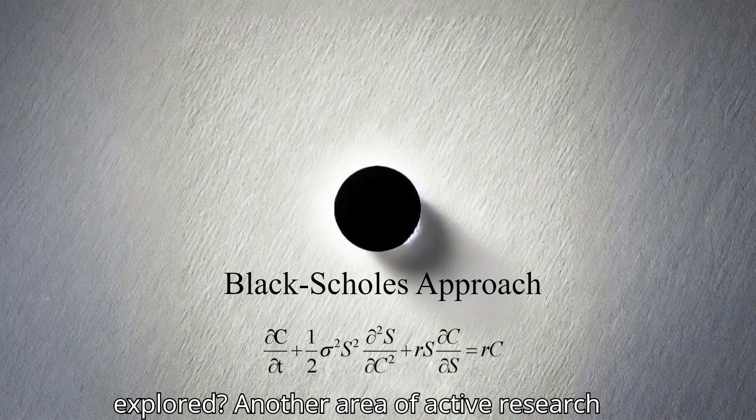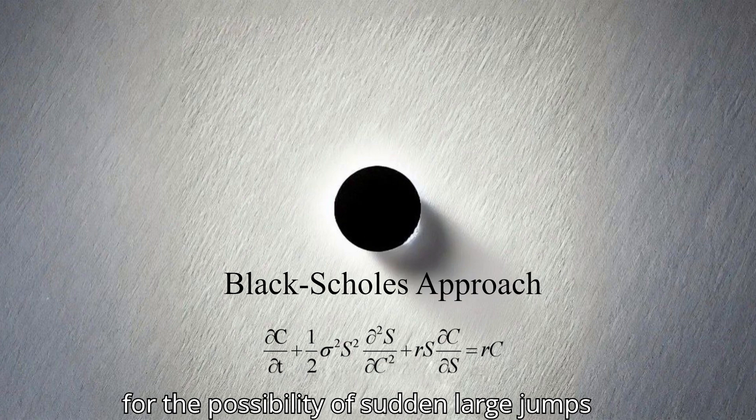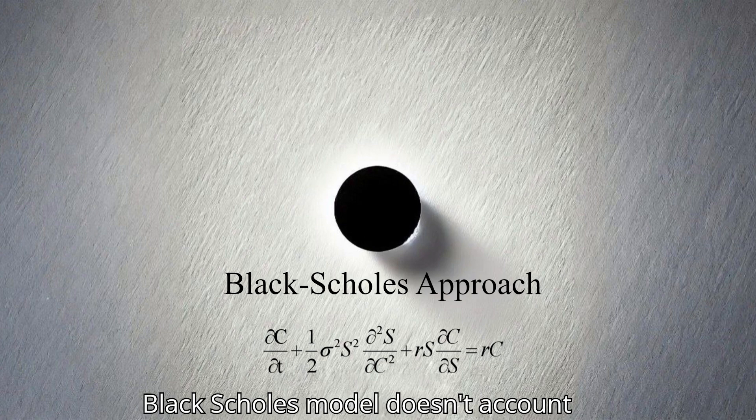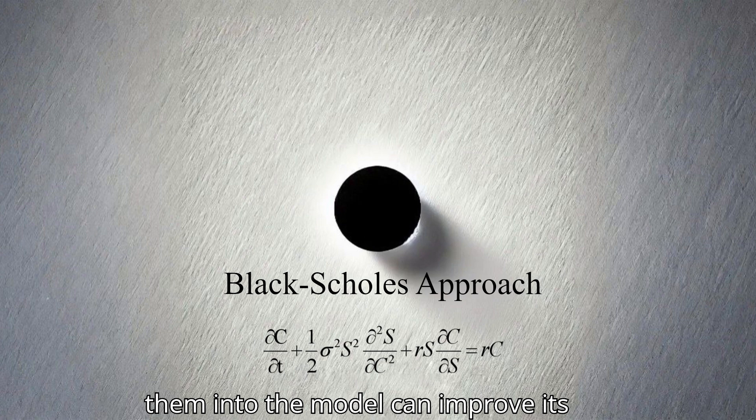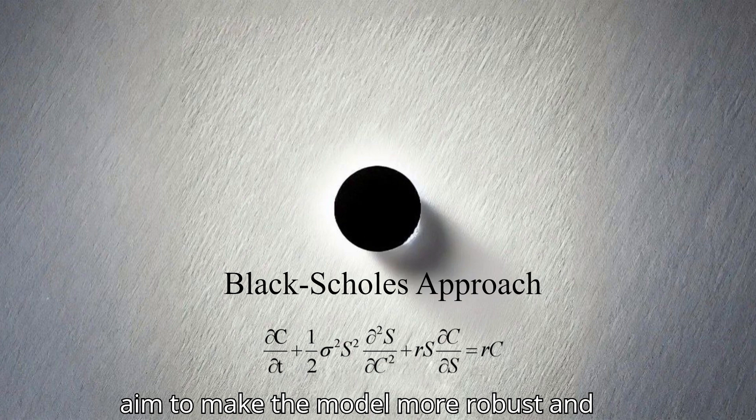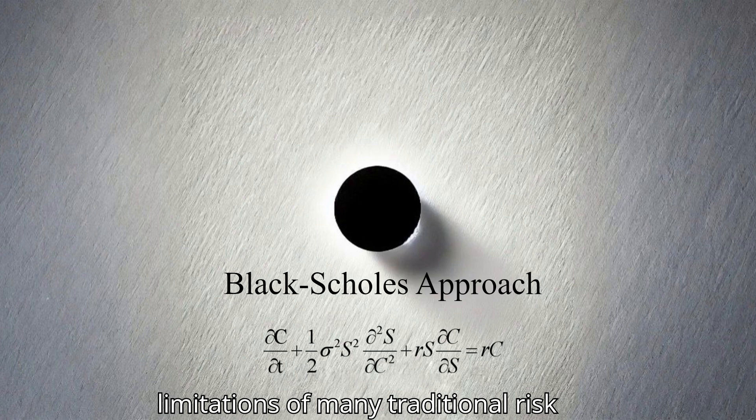That's a significant improvement, as we discussed how the assumption of constant volatility can be a major weakness of the Black-Scholes model. What other modifications are being explored? Another area of active research is incorporating jump diffusion processes into the model. This allows for the possibility of sudden large jumps in asset prices, which the standard Black-Scholes model doesn't account for. These jumps, often triggered by unexpected news or events, can significantly impact option pricing, and incorporating them into the model can improve its accuracy.